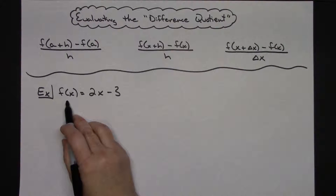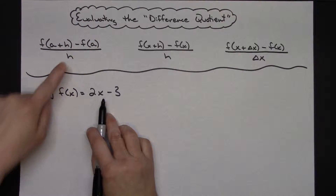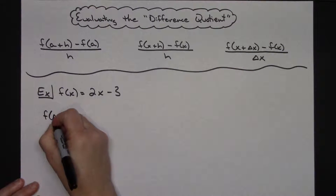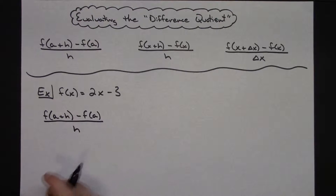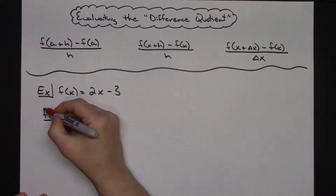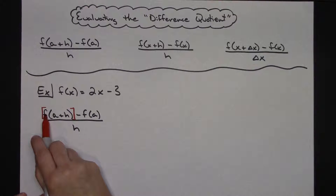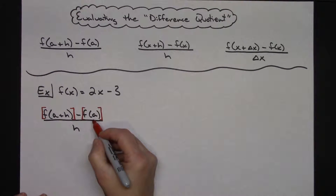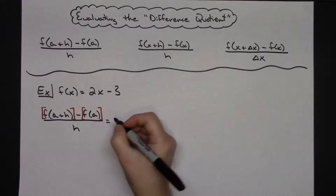Our function is f(x) = 2x − 3. I'm going to read the notation and do exactly what it says. I'll write: f(a+h) minus f(a), all over h. Before getting started, I want to think of this as two quantities being subtracted on top. I'll do this first part of the formula — take a+h and plug it into the function — and then I'll take a and plug it into the function, adding brackets to keep those quantities clear.